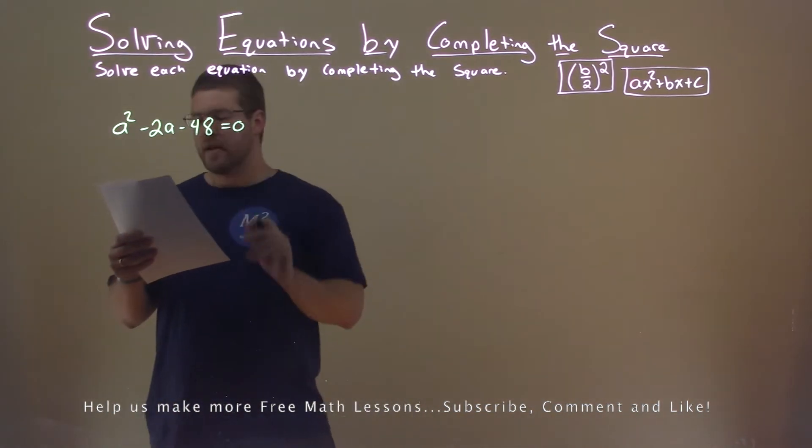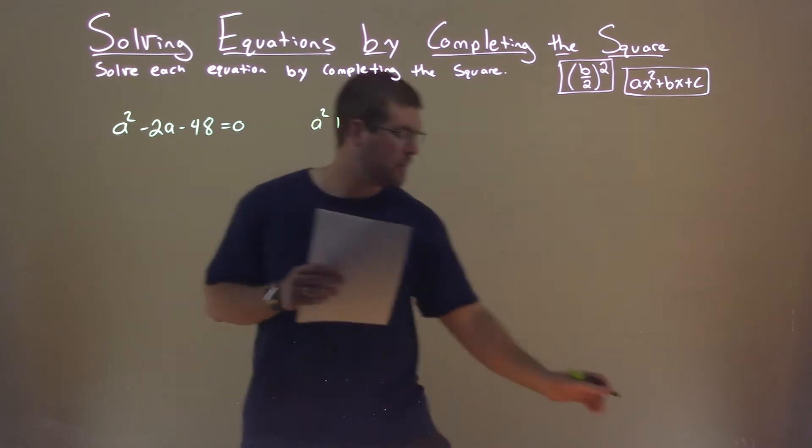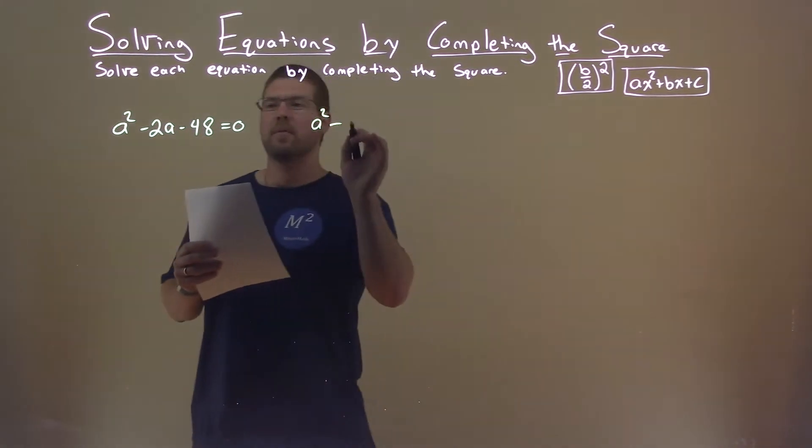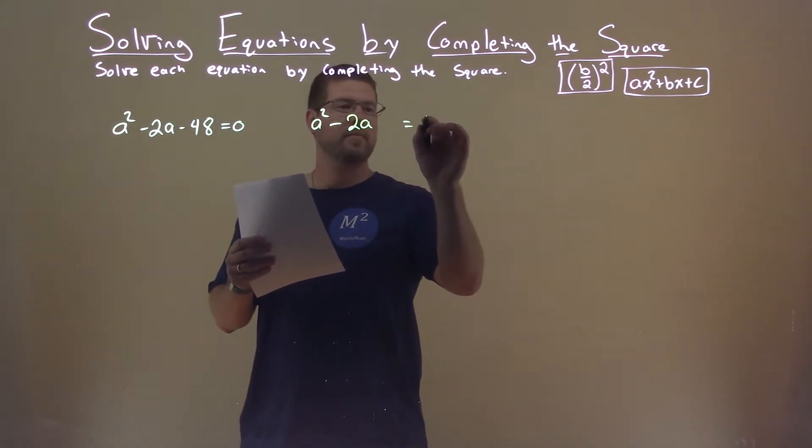First thing I'm going to do is add 48 to both sides of the equation. That gives me a squared minus 2a equals positive 48.